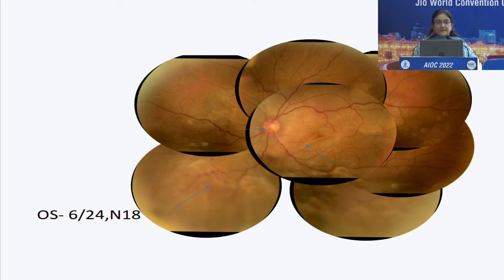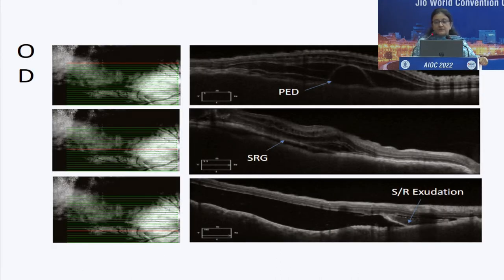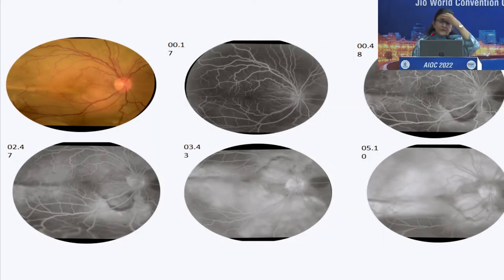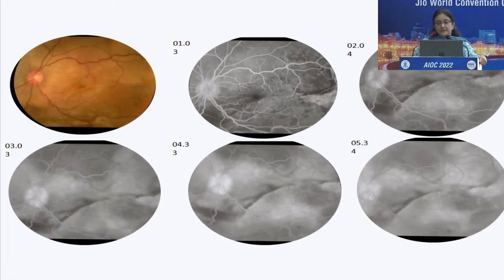When we evaluated the OCT, we found evidence of CSCR and thought this patient was having CSCR because of the high oral dose of steroids she was on. She also gave an interesting history of alopecia being treated with minoxidil, which is a known causative agent for CSR. So we thought we were quite on target with the diagnosis of chronic CSCR.